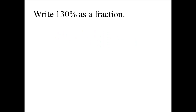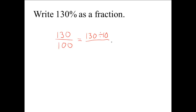Write 130 percent as a fraction. We will write 130 over 100 and then simplify. The ones place of both numbers ends in 0, so we know a common factor is 10. We divide both numerator and denominator by 10: 130 divided by 10 is 13, and 100 divided by 10 is 10. So the simplified fraction for 130 percent is 13 tenths.